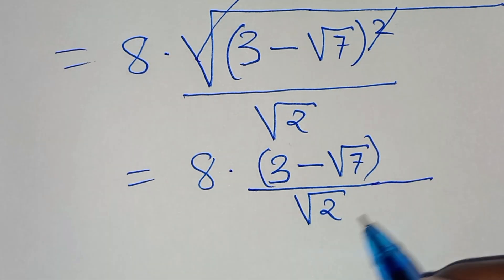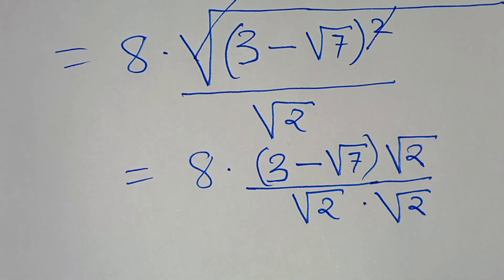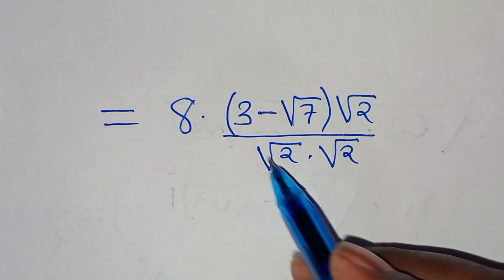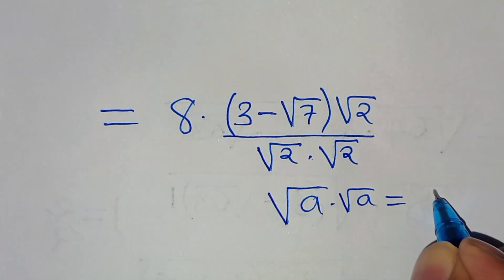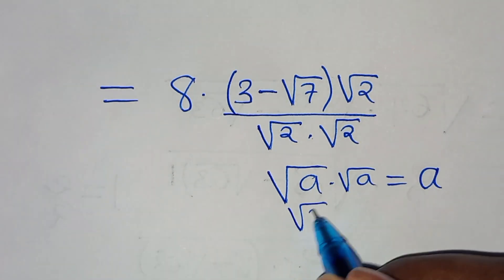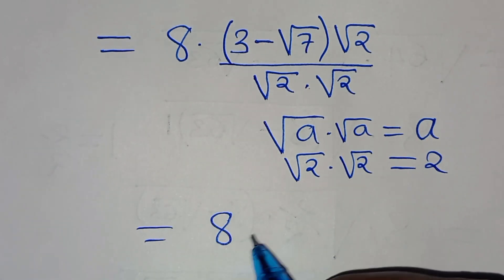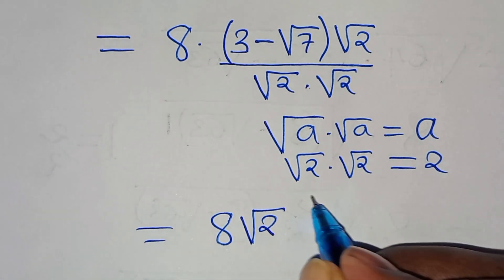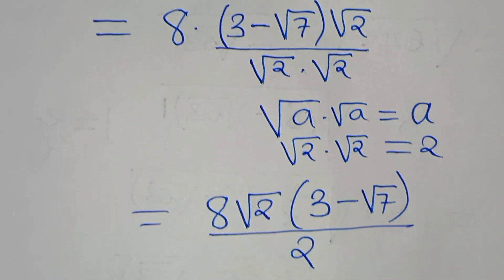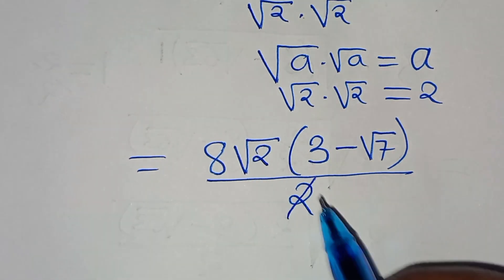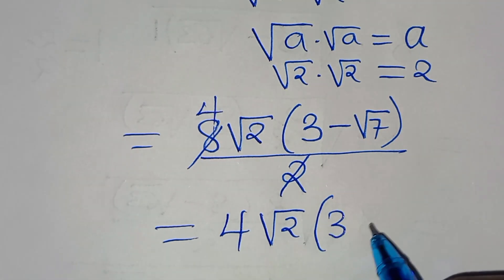The next step is to rationalize the denominator by multiplying both numerator and denominator by square root of 2. Since square root of 2 times square root of 2 equals 2, we have 8 multiplied by square root of 2 into the parentheses 3 minus square root of 7, all divided by 2. Simplifying 8 divided by 2 gives 4, so we have 4 times square root of 2 multiplied by 3 minus square root of 7.